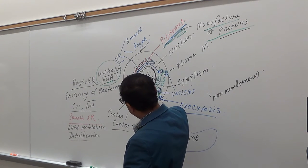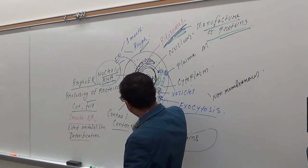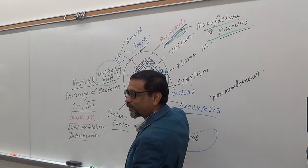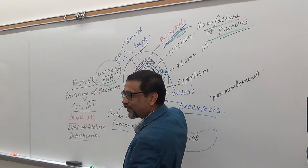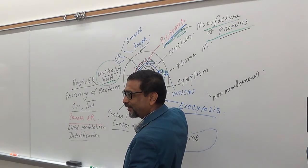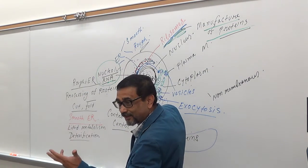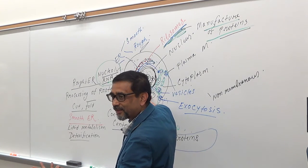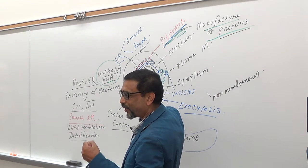The mitochondria is called the powerhouse because most of the metabolism occurs there. Metabolism produces ATP, and ATP gives energy — that's why it is called the powerhouse.